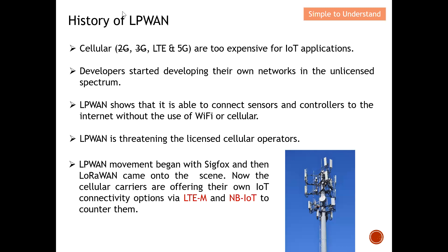Let's go through the history of LPWAN. For cellular, we have 2G, 3G, LTE (also known as 4G), and also 5G. In Singapore we don't have 2G anymore, and 3G will stop somewhere in the middle of the year 2024. We are left with LTE and 5G; however, these two are very expensive for IoT applications.